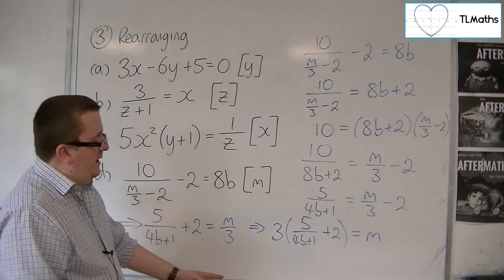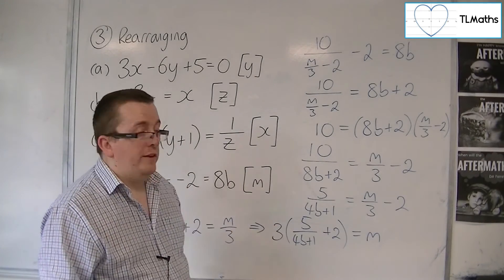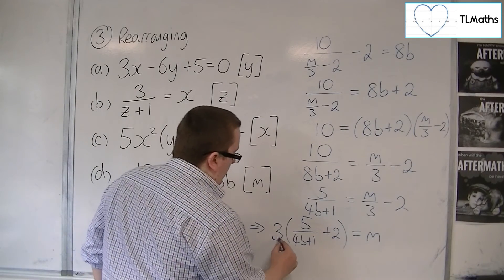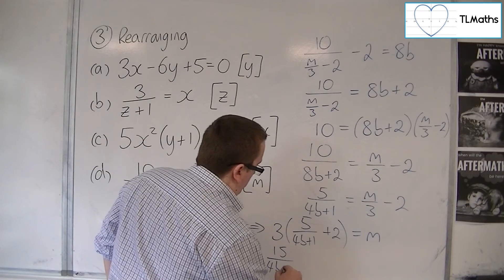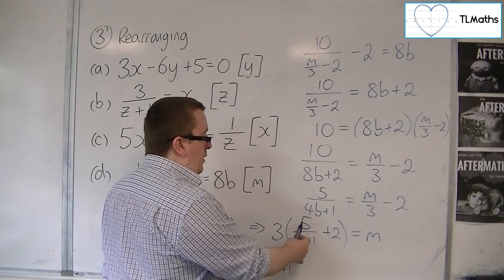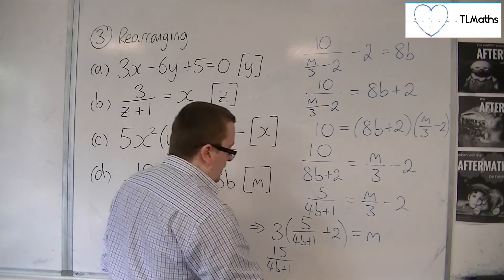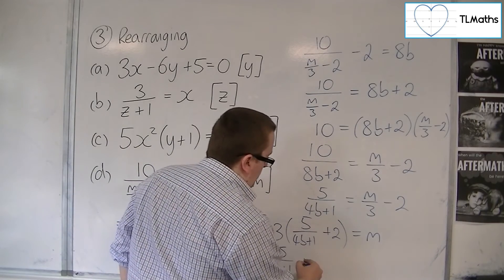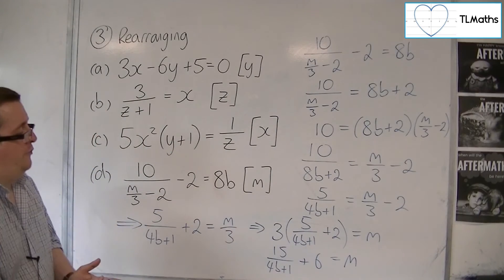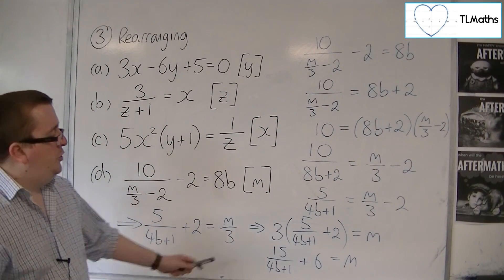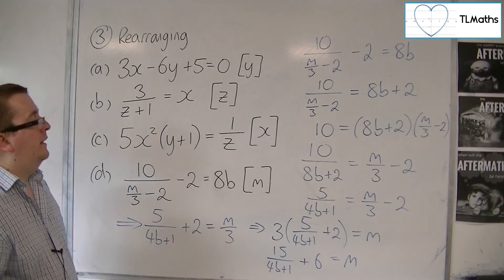Now, you can multiply this through if you like. You could write this as 3 lots of 5, so 15 over 4B plus 1. Now, notice how I only multiply the numerator here. And then you've got 3 times 2 is 6. So you could write M as 15 over 4B plus 1 plus 6, like that. Or you could just leave the answer like this.